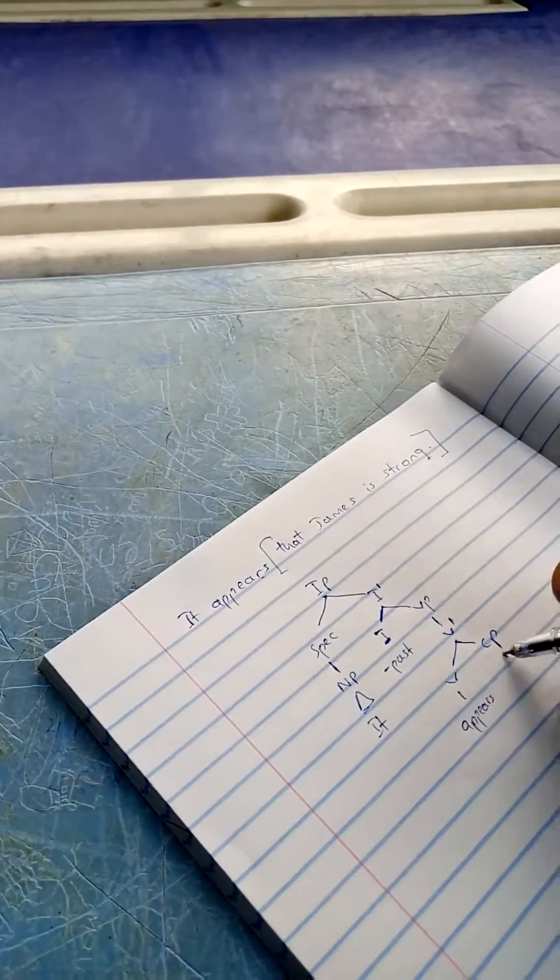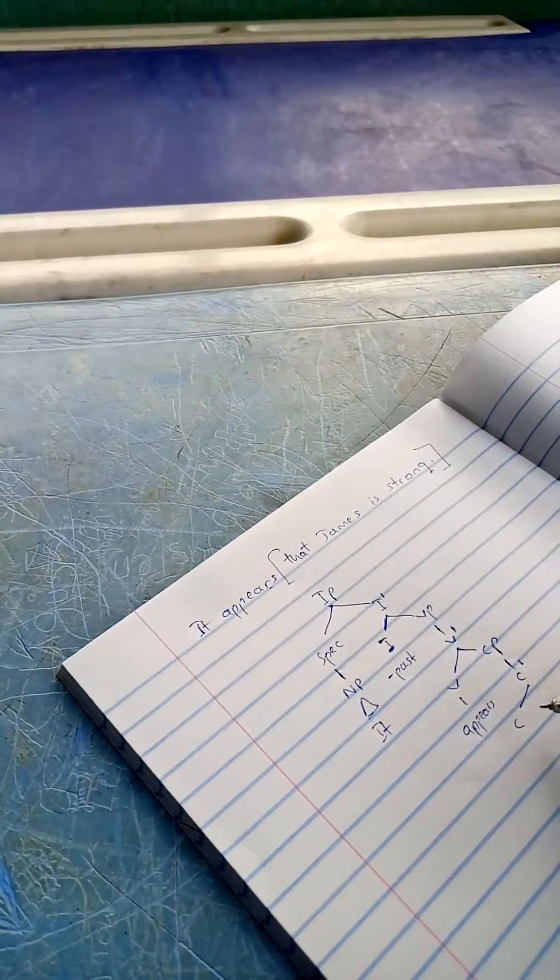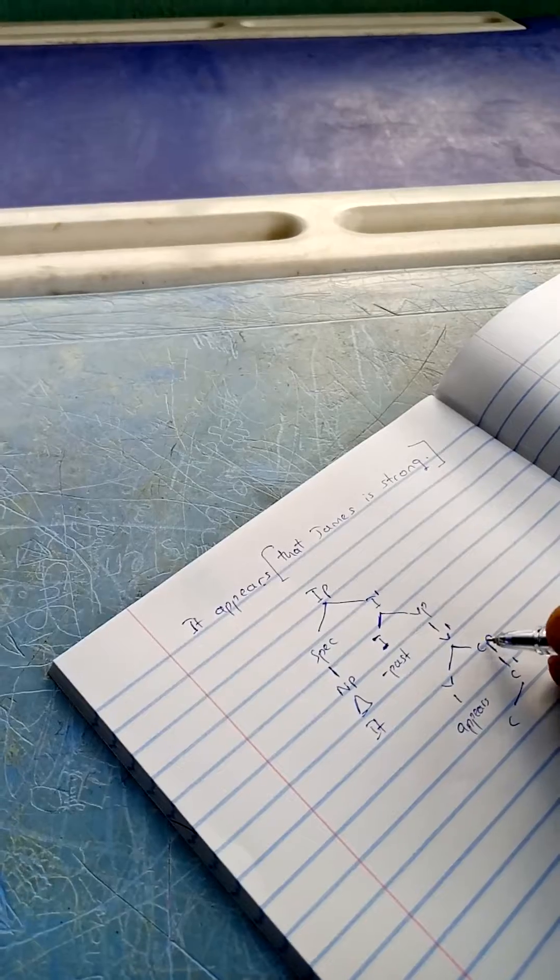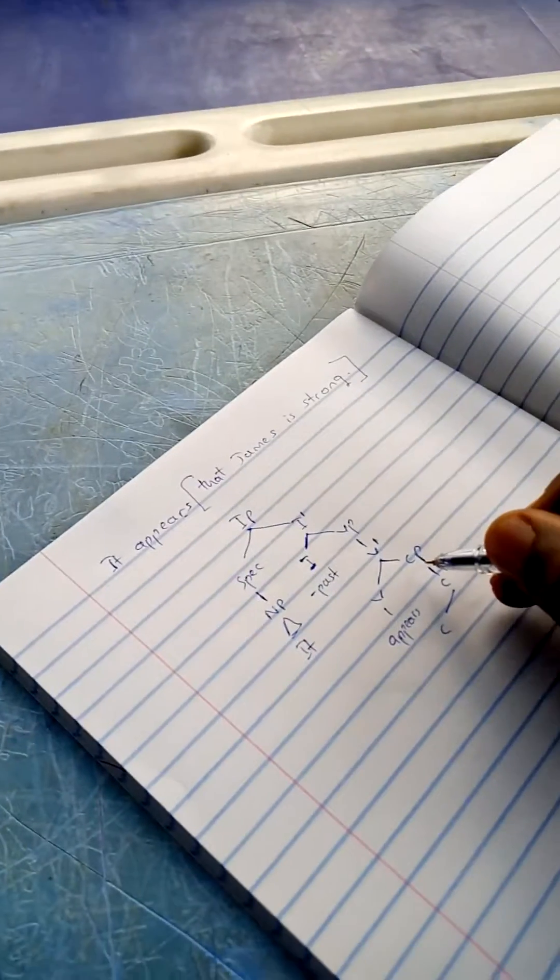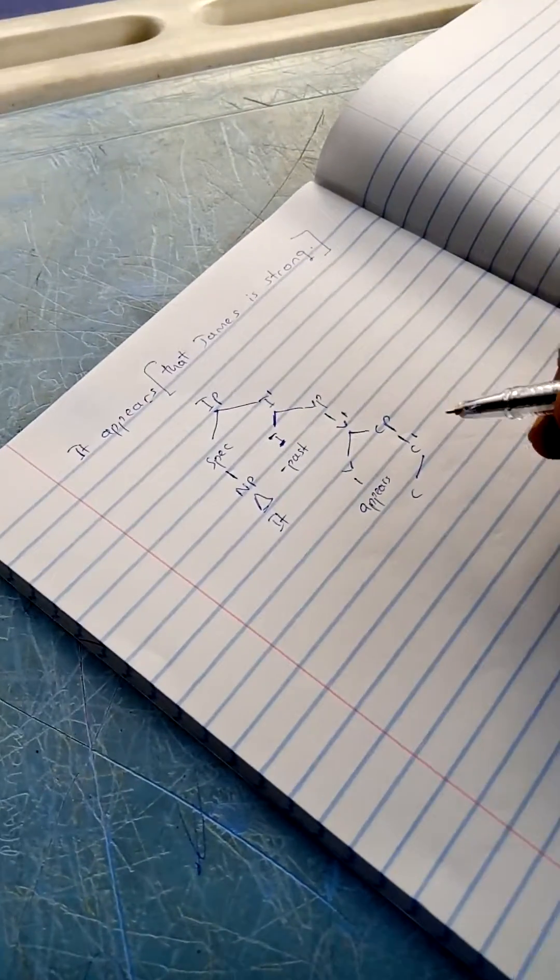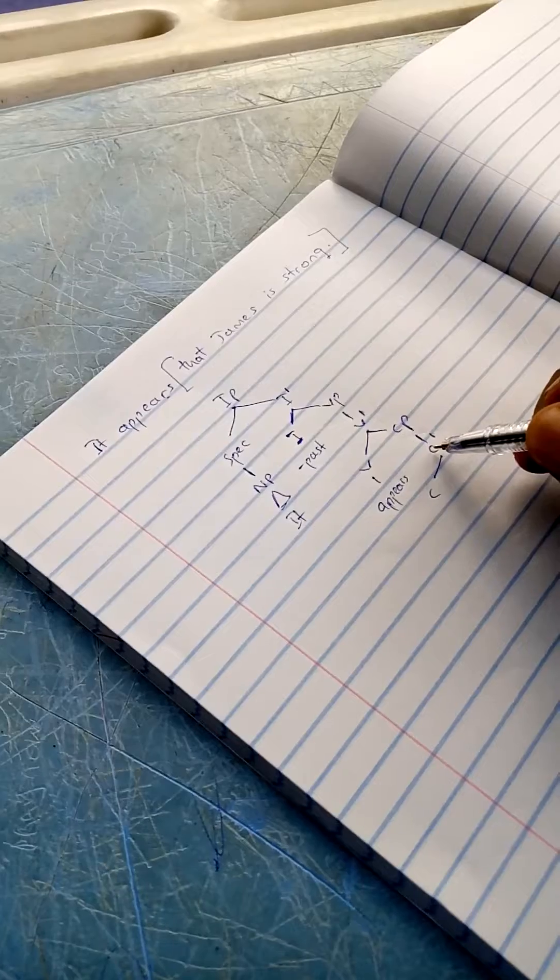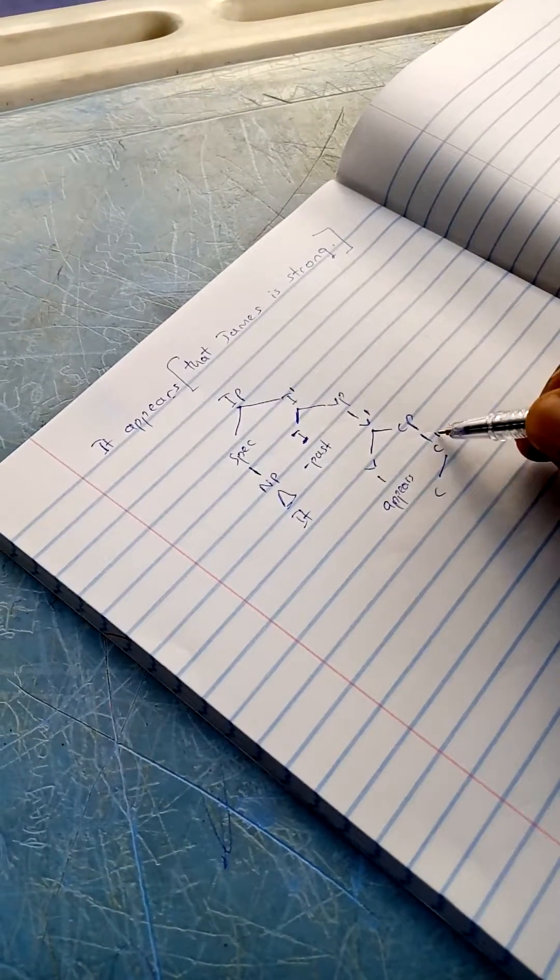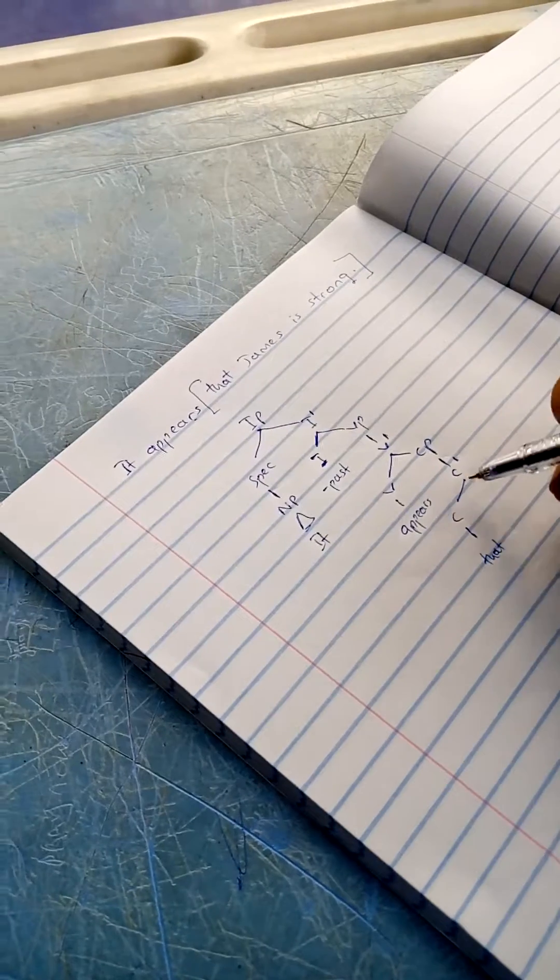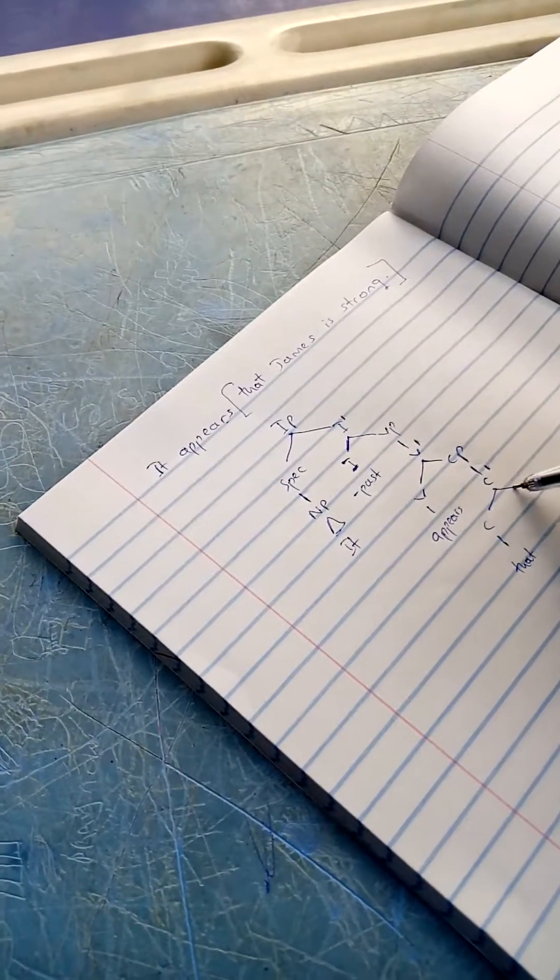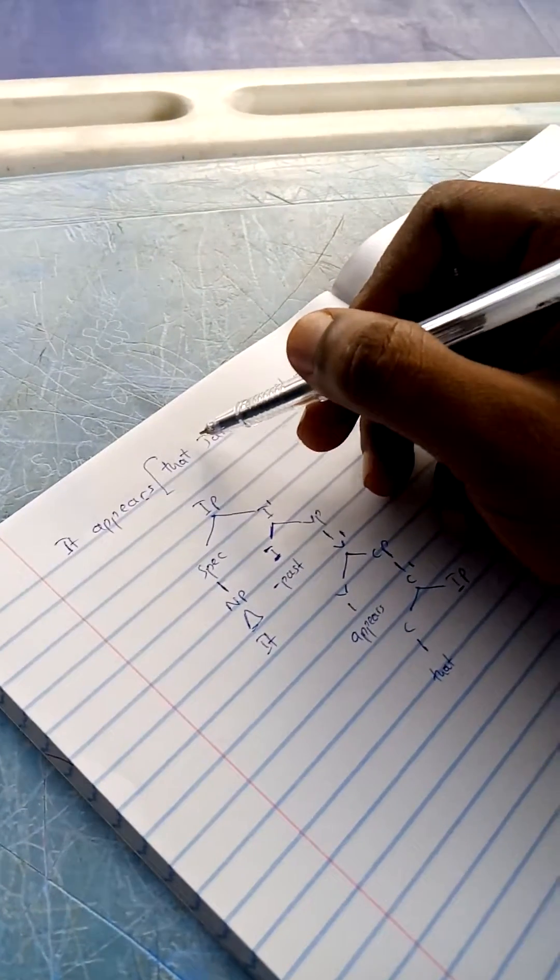The subordinate clause has a C-bar, which expands as the complement - this is called a complementizer phrase. You have the C, which is 'that', and then you have another IP, which starts from here.